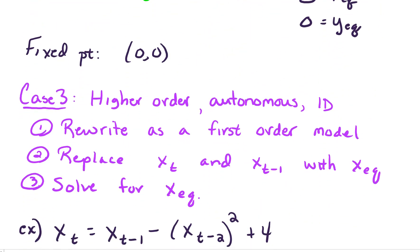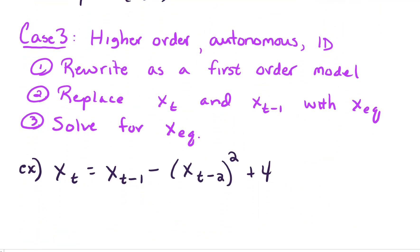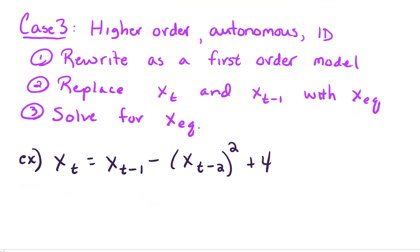For case 3, we're going to look at higher-order autonomous systems, keeping our focus to systems with one variable. Step 1: write as a first-order model. Step 2: replace x_t and x_{t-1} with x_eq and solve for the equilibrium point.